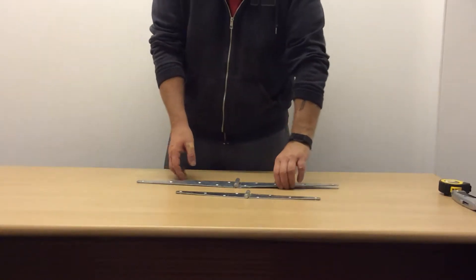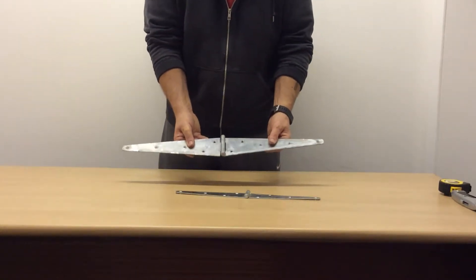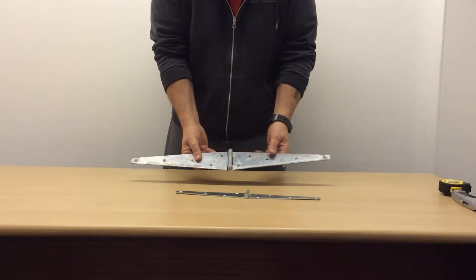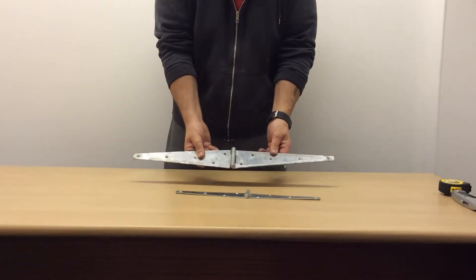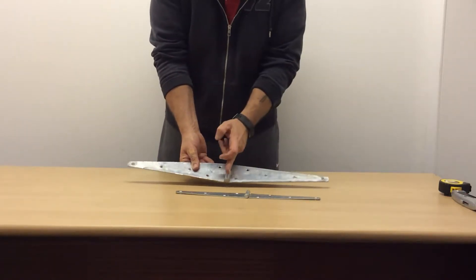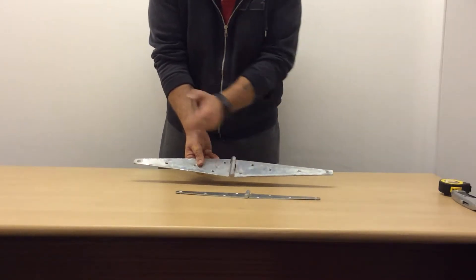Hi, Paul here from First Fix South, and today I have with me a couple of our strap hinges. Now when we give a measurement for strap hinges, if we call them an 8 inch strap hinge, that will be 8 inches from the centre of the pin both sides.